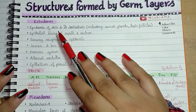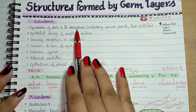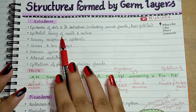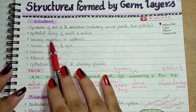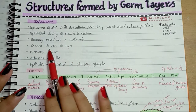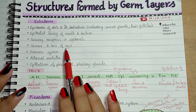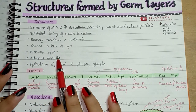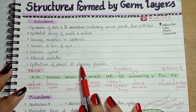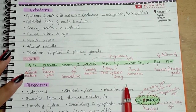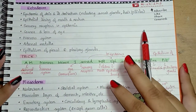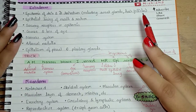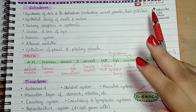Structures formed by ectoderm: epidermis of skin and its derivatives including sweat glands, hair follicles and all; epithelial lining of mouth and rectum; sensory receptors in epidermis; cornea and lens of eye; nervous system; adrenal medulla; and epithelium of pineal and pituitary glands. These are the structures we found in the textbook — they are not the only ones formed by the ectoderm.